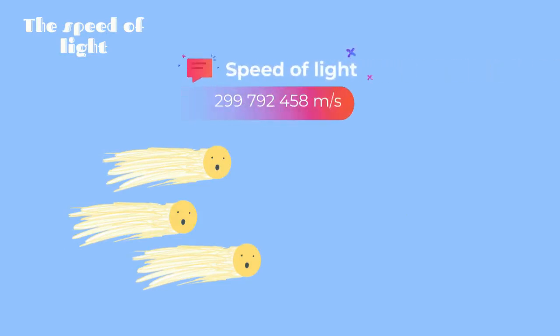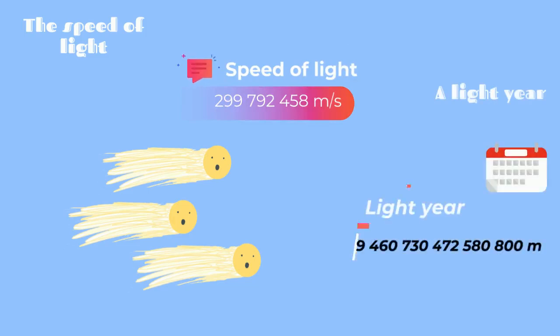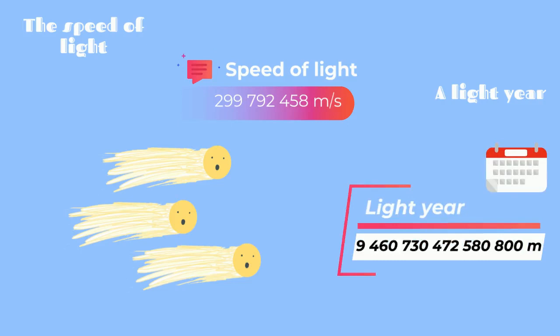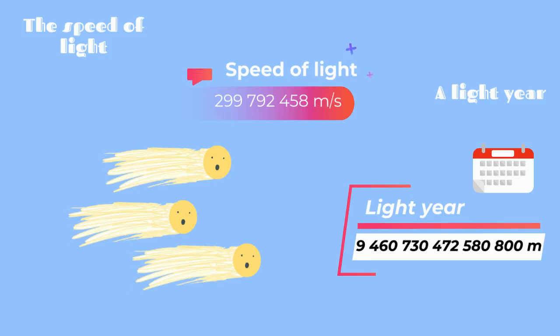What is the speed of light? The speed of light is how much light travels in a second, which is 299,792,458 meters per second. A light year is how much light travels in a year — that is 9,460,730,472,580,800 meters. Is your head starting to hurt? Because that's a lot of digits and it's a humongous number.